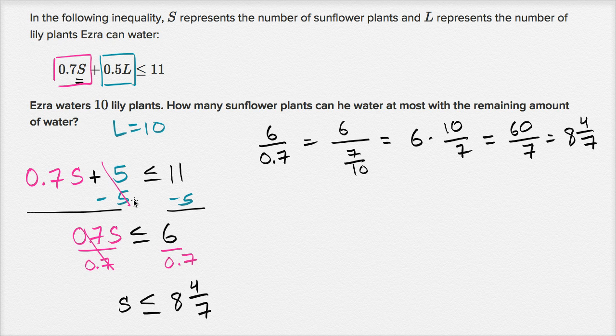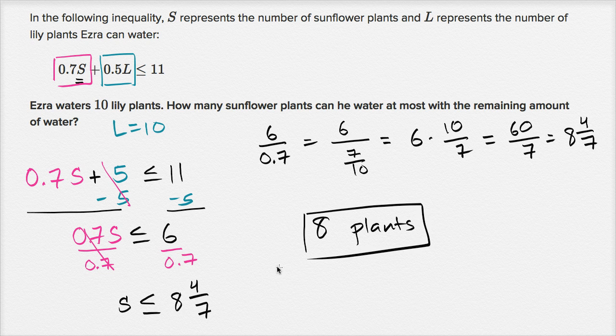Now we're assuming that we're only thinking in terms of whole plants, integer number of plants. And so, if S has to be less than 8 and 4 sevenths, how many sunflower plants can he water at most with the remaining amount of water? Well, we'll say that at most he can water 8 plants. We're going to assume that he can't water just a fraction of the plant. He either waters something or he doesn't. So he's going to water 8 plants, because that's the largest whole number that is less than or equal to 8 and 4 sevenths.